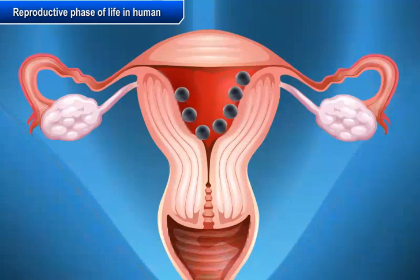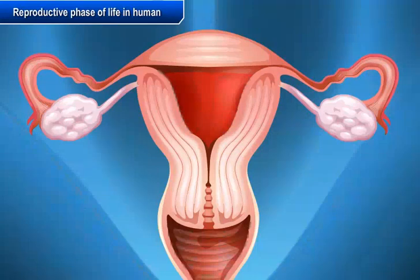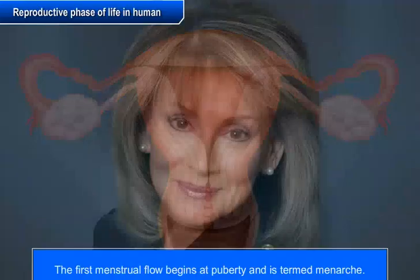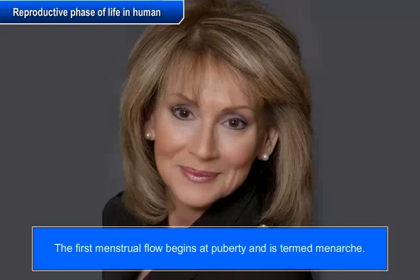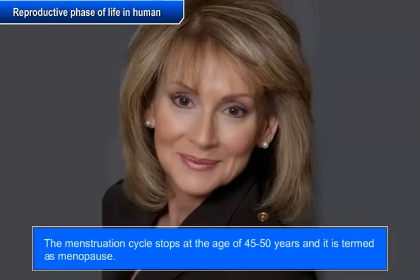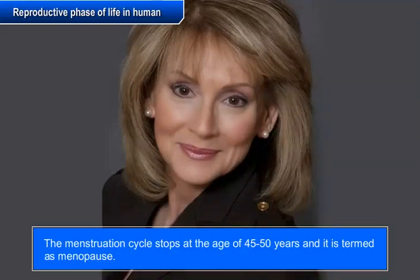If fertilization does not occur, the released egg and the thickening lining of the uterus along with its blood vessels are shed off. This causes bleeding in women and is known as menstruation, which occurs every 28-30 days. The first menstrual flow begins at puberty and is termed menarche. The menstruation cycle stops at the age of 45-50 years and is termed menopause.